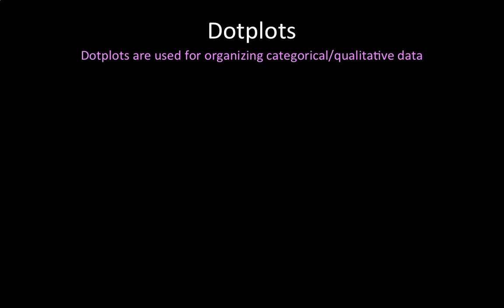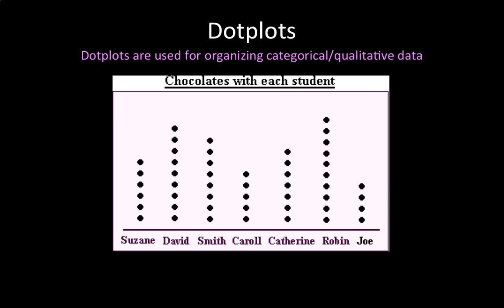For example, we can use a dot plot to determine how many pieces of chocolate each student has in a class of seven. In this case, each dot represents a piece of chocolate that each student has. As we can see from the dot plot, Suzanne has six pieces of chocolate and David has nine pieces of chocolate and so on.